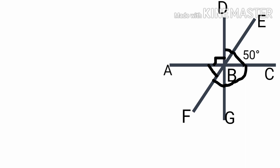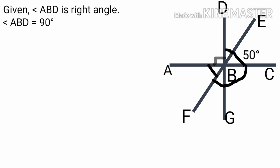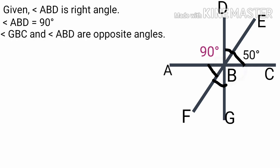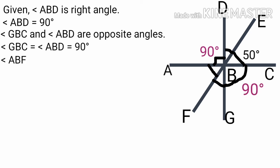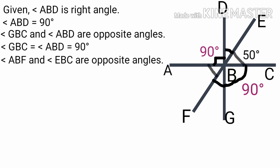This figure — mark points A, B, C, D, E, F and G. DB is perpendicular to AC. Therefore angle ABD is equal to 90 degrees. Angle GBC and angle ABD are opposite angles. Therefore angle GBC is equal to angle ABD, that is equal to 90 degrees. Angle ABF is equal to angle EBC, that is equal to 50 degrees.